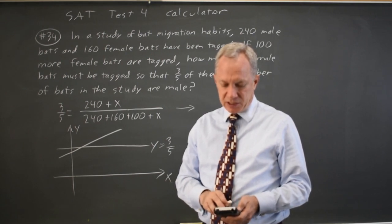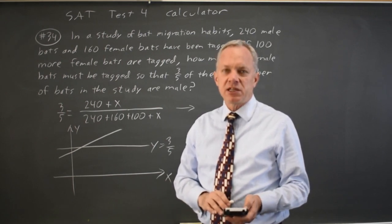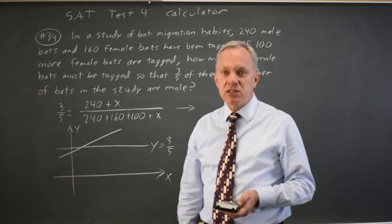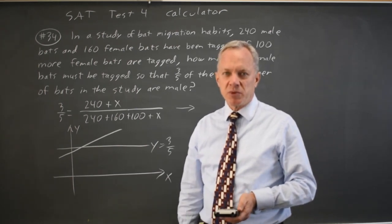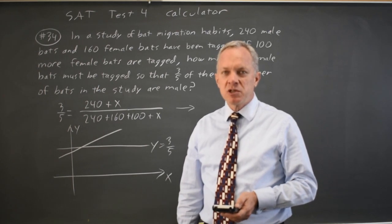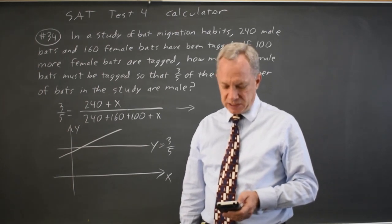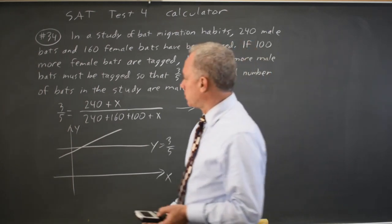And the x value where they intersect is my answer. So second trace for calculate, choice 5 is intersect, hit enter three times. This is my favorite way of solving equations with only one variable if I'm pressed for time. And it works no matter how complex the equation.